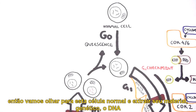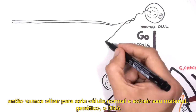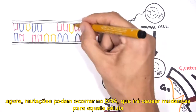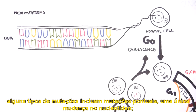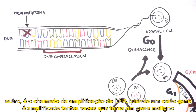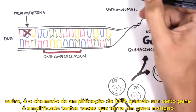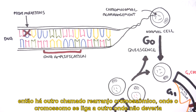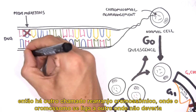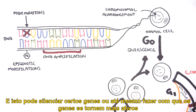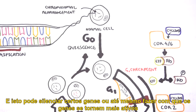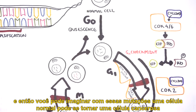Let's look at this normal cell and pull out its genetic material, which is DNA — a double-stranded helix made up of four types of nucleotides. Mutations can occur within the DNA, which will cause changes to that cell. Some types of mutations include point mutations, a single change in a nucleotide; DNA amplification, where a certain gene gets amplified many times; chromosomal rearrangement, where chromosomes attach to one another where they shouldn't; and epigenetic modifications such as methylation and acetylation above genes. These can silence certain genes or cause genes to become more active. With these mutations, a normal cell can become a cancerous cell.